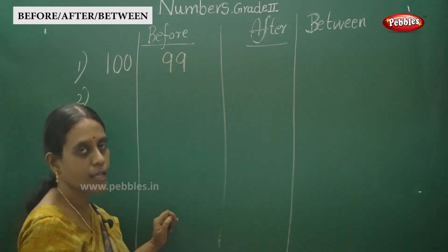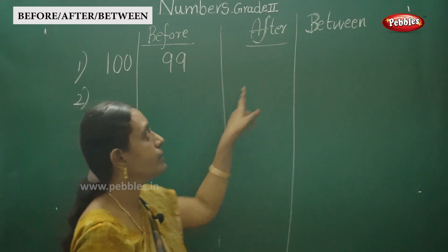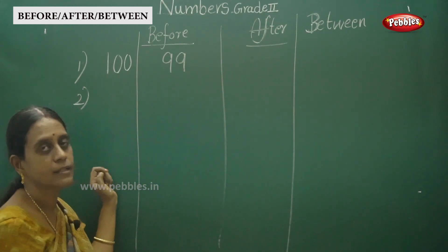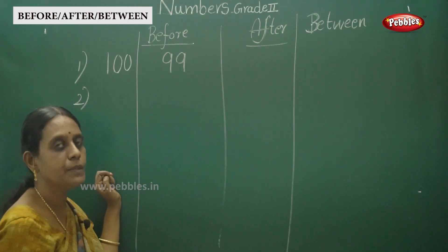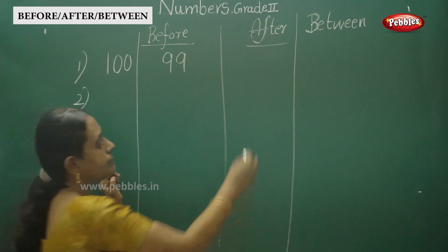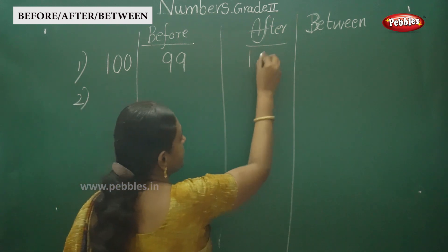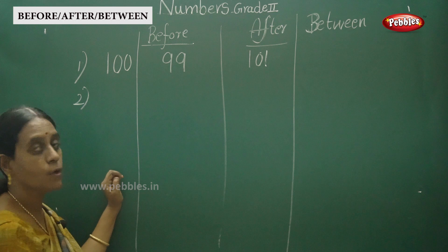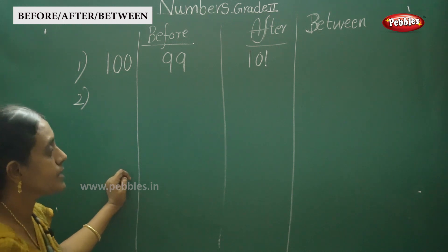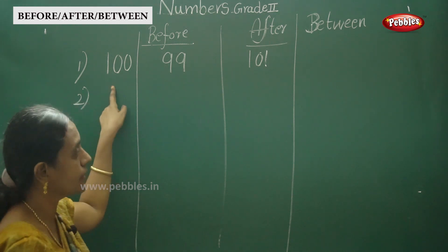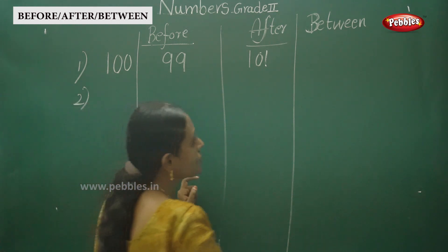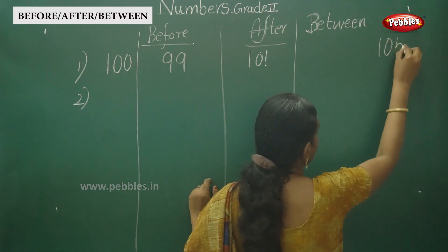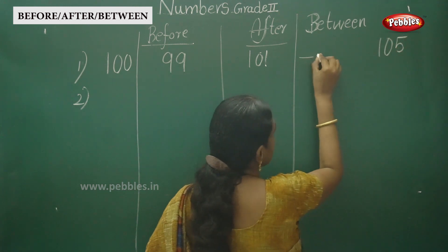And in the same way, what comes after 100? Simple — it is 101. And for between numbers, we will write up to 105.